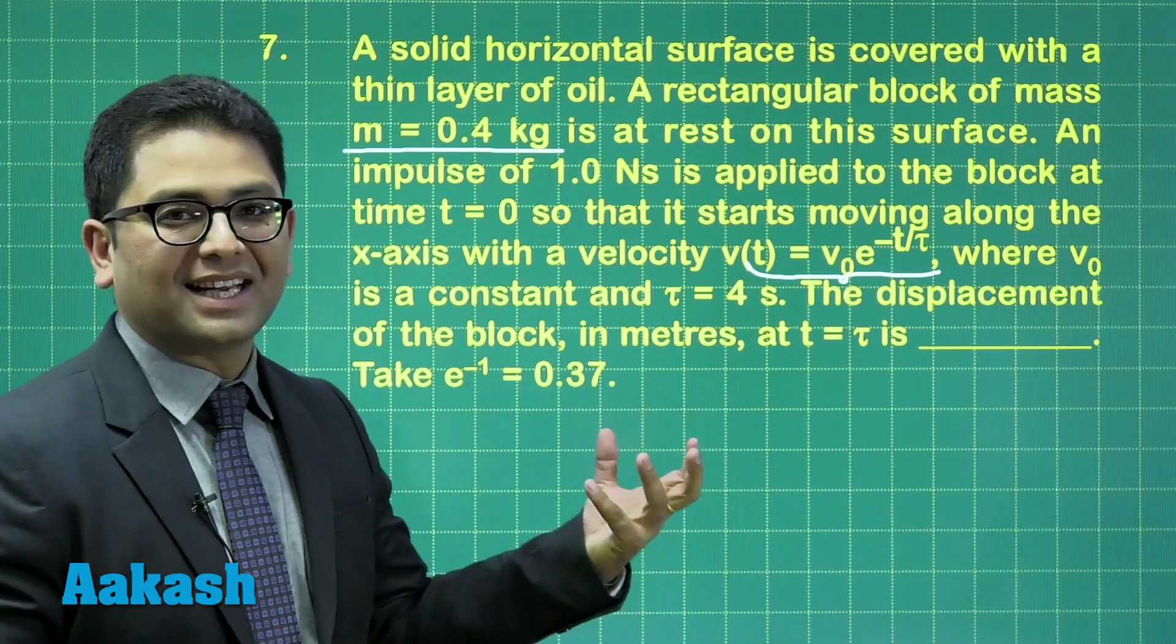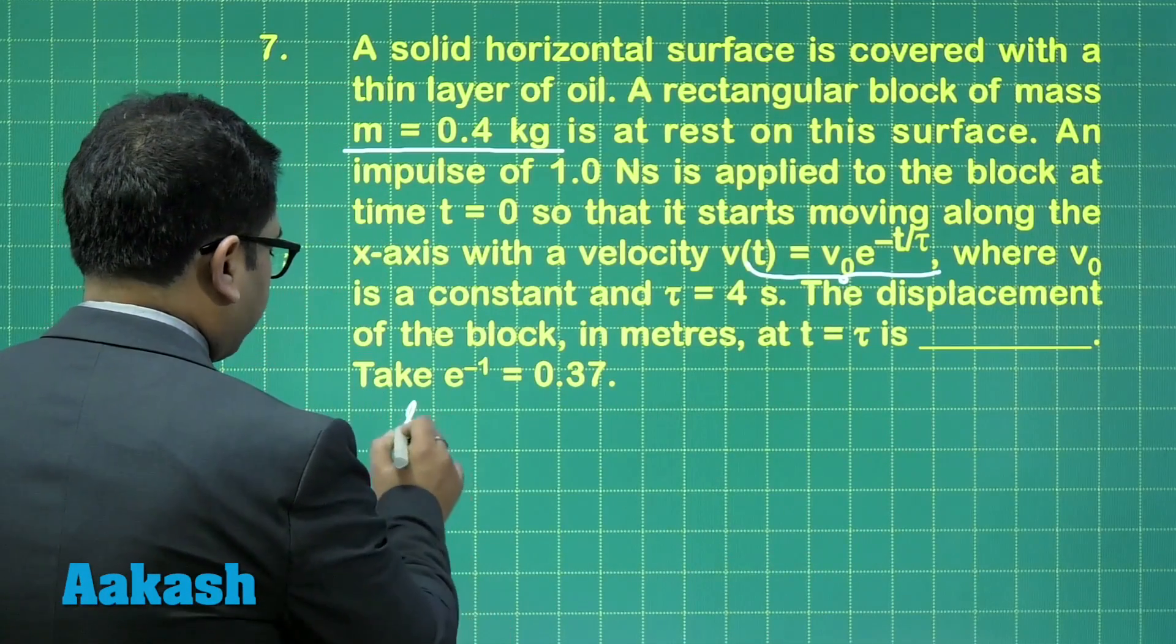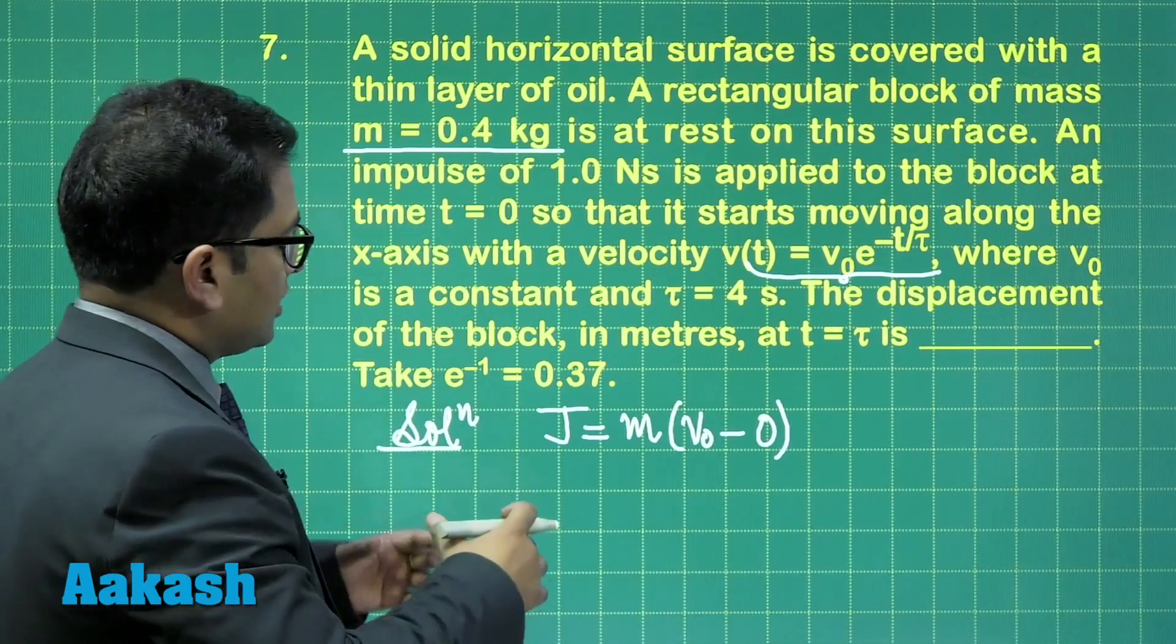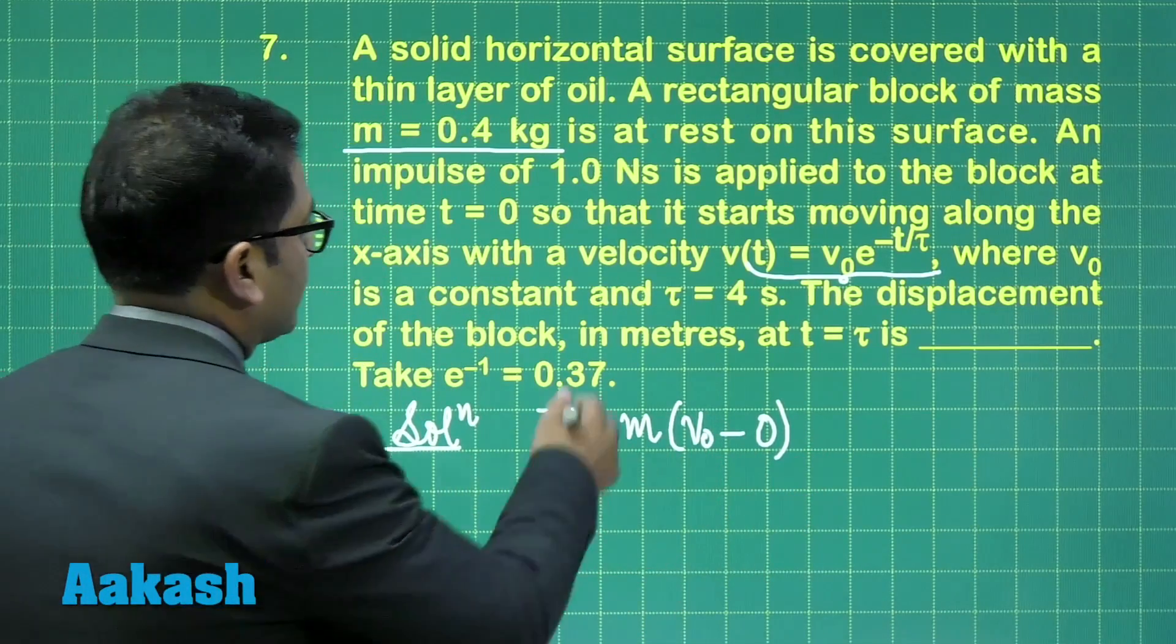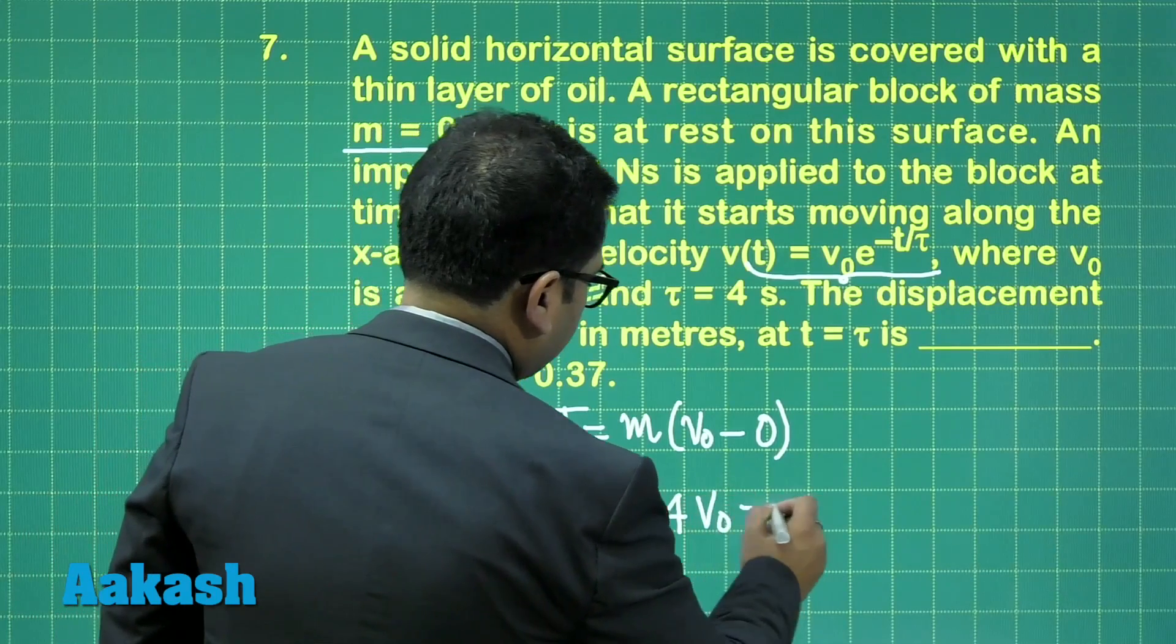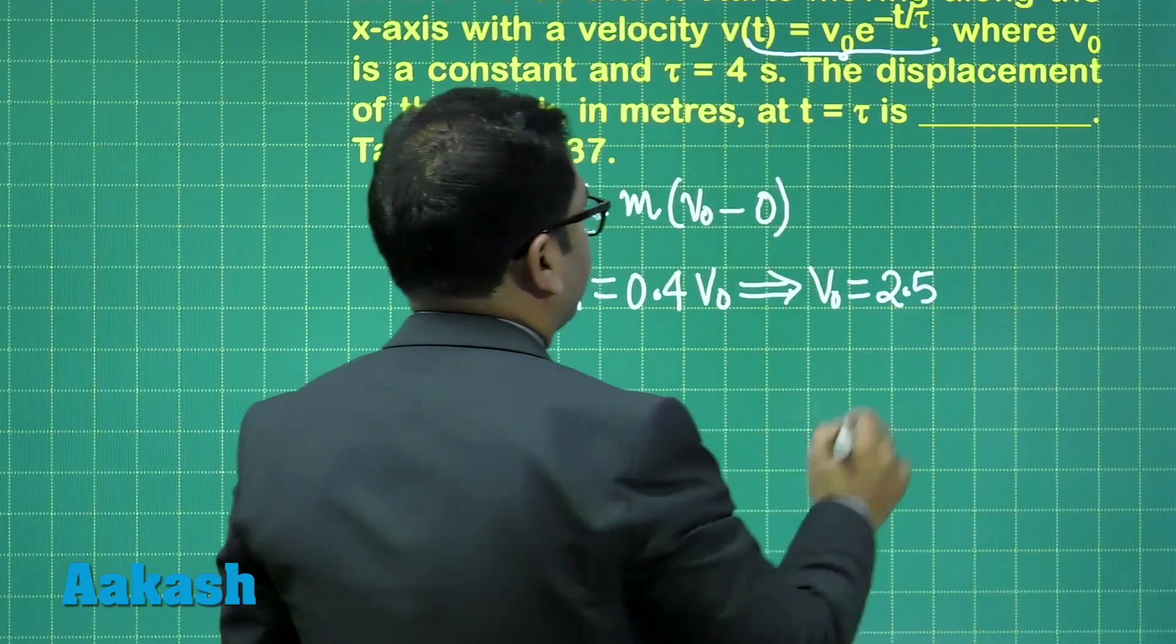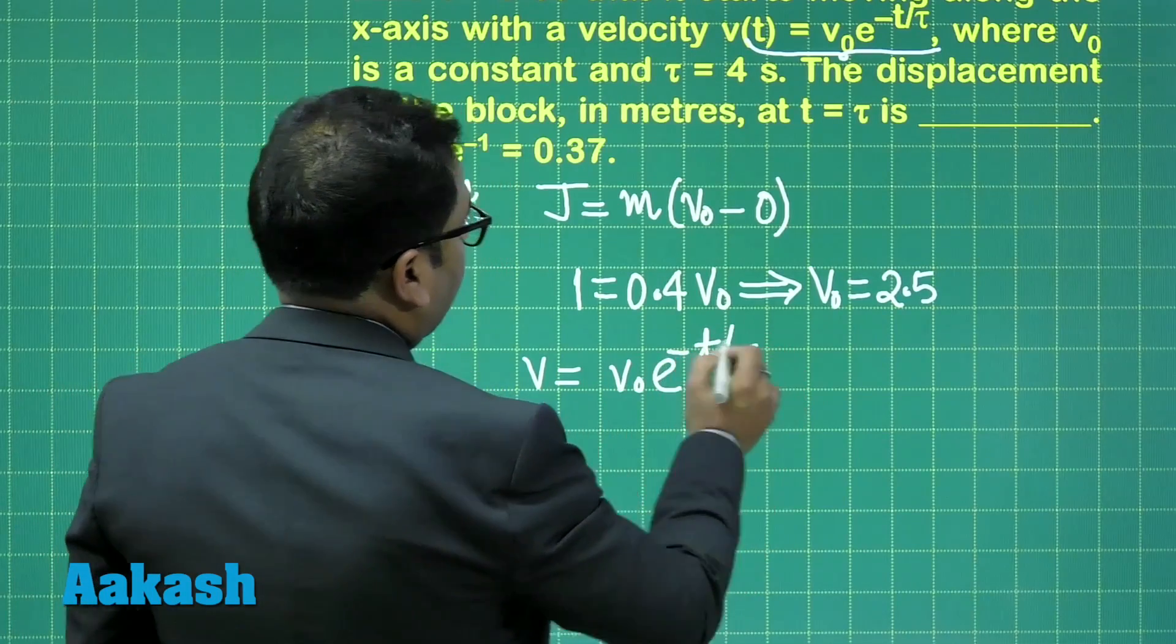We need to calculate the displacement of the block at t equals τ, that means in one time constant. The first thing is, if I just understand, j would be equals to m v₀ minus zero, because just before application of impulse, the velocity is zero, just after the application velocity becomes this much. j is one Newton second. m is 0.4 multiplied by v₀. And this gives me v₀ equals 2.5. So now, I can calculate the initial velocity here. And since v is given as v₀ e raised to the power minus t by τ, and you need to calculate the displacement.